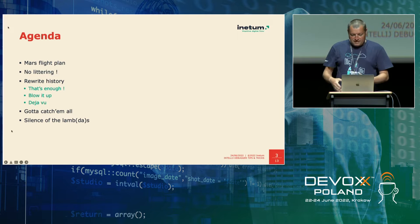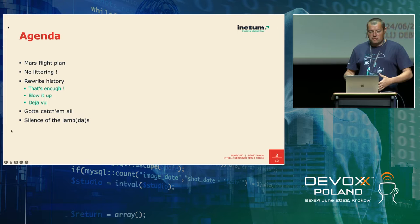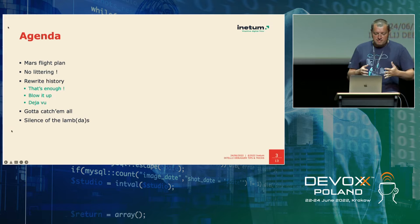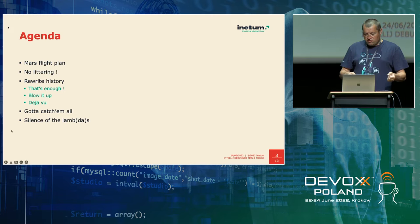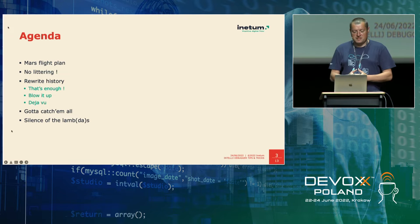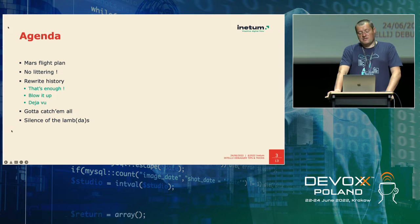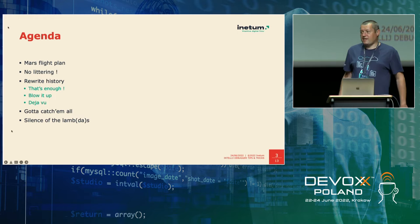Then something more interesting: we will try to make the debugging part not only static — just analyzing what is happening inside the application — but we'll also try to change its behavior and even rewrite history, changing the execution path to perform debugging better. After that, two last things: the first is something like 'Pokémon — Gotta Catch 'Em All' — how to properly catch exceptions during the debugging session.